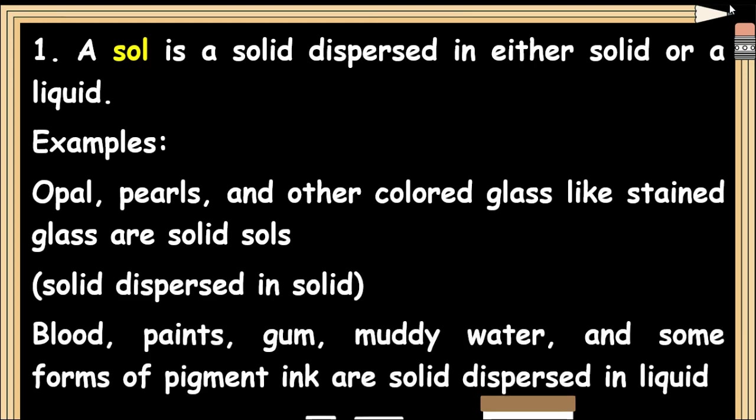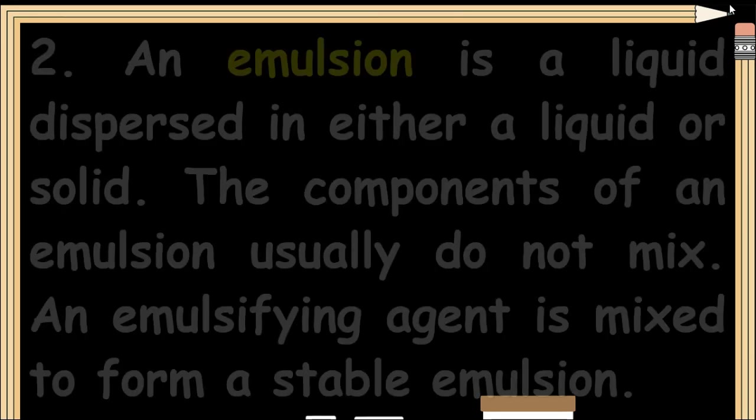Blood, paints, gums, muddy water, and some forms of pigment and ink are examples of solid dispersed in liquid.